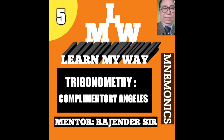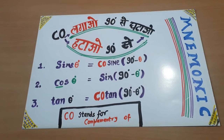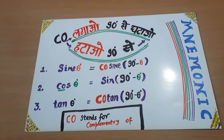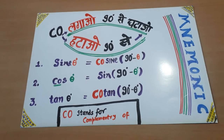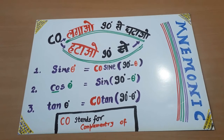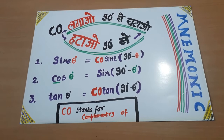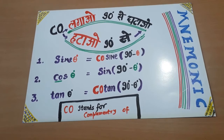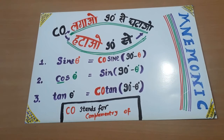Ko lagao, 90 mein se ghata do. Ko hatao, tab bhi 90 mein se ghata do. I am coming up with my notes and you will understand there. I have come up with my notes. Ko lagao, 90 se ghata do. Ko hatao, 90 se ghata do.